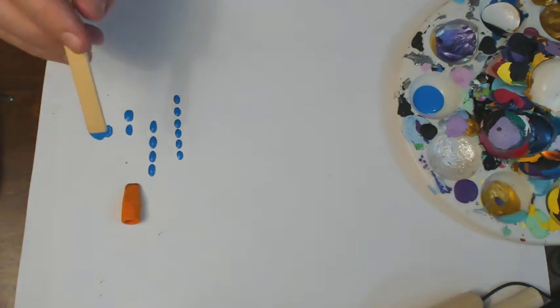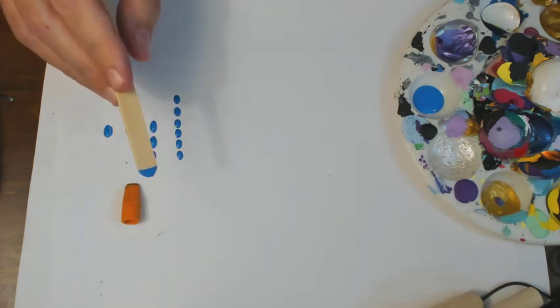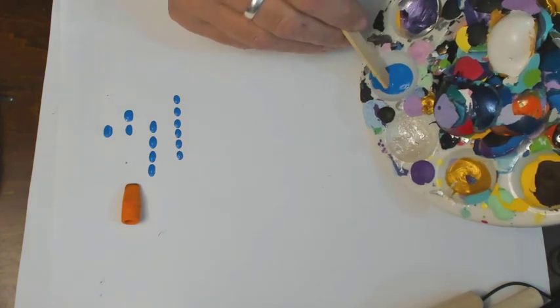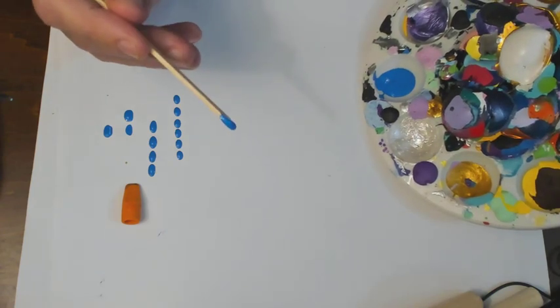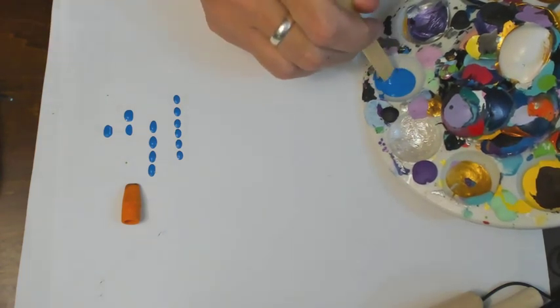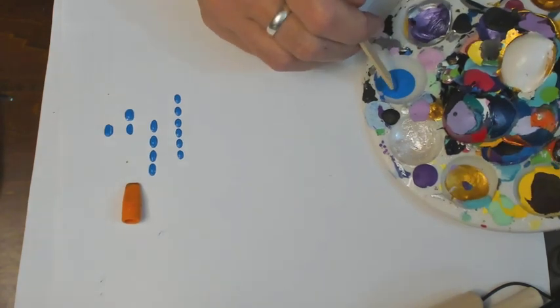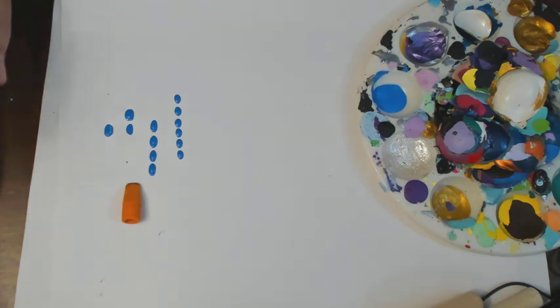So the thing with dotting that I always try to make people aware of though is the consistency of your paint. It's got to be a little fluid. You can see if I go to stir this up a little, it drips off. It's a little fluid. It barely is holding on to the tool. But it's not sticky. It's not thick like the heavy body ones. It's a little bit fluid.